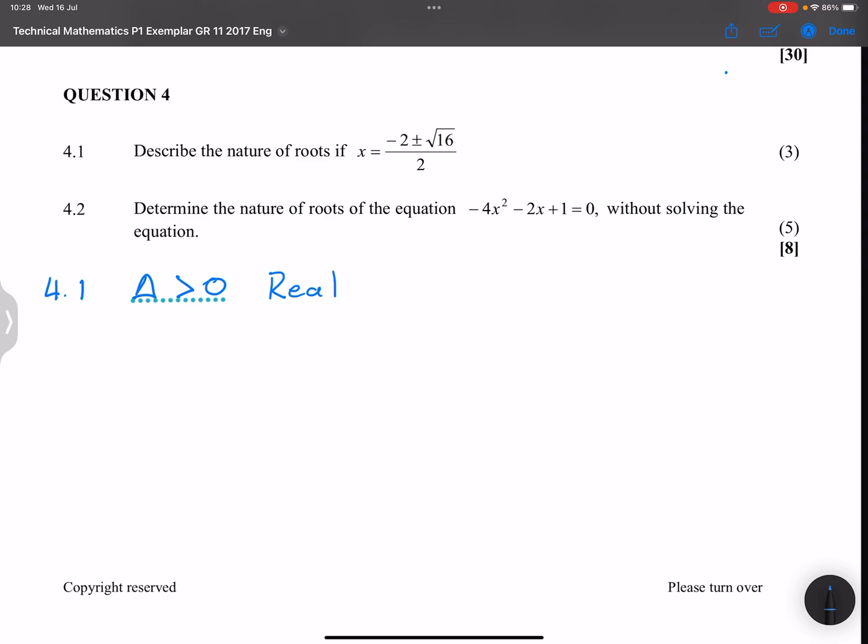Secondly, we can see that our delta value, what's inside the square root, is greater than zero. It is not equal to zero. So in this case, roots would be real but they will be unequal. Remember, for equal roots it means that our delta, what is underneath the square root, would simply be equal to zero.